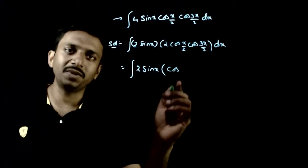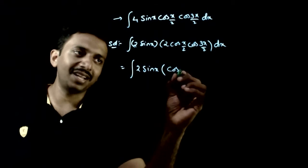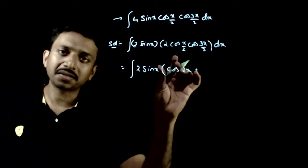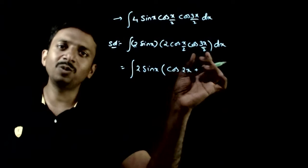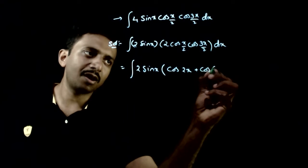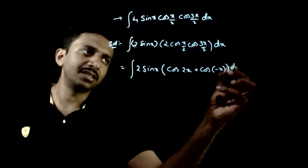That is cos of a plus b, that is x by 2 plus 3 x by 2 is 2x, cos a plus b plus cos a minus b, cos of x by 2 minus 3 x by 2 is cos minus x, cos minus x dx.